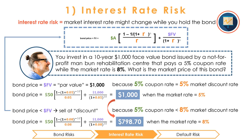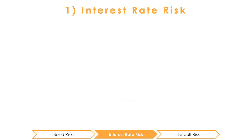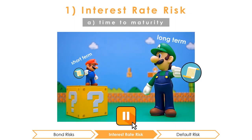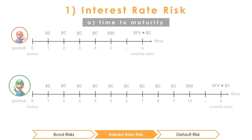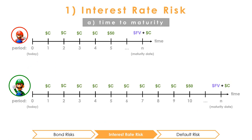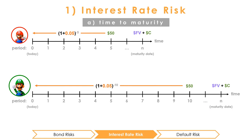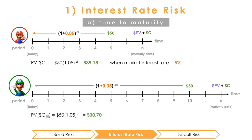All bonds are susceptible to interest rate risk, but certain bonds are more sensitive than others to interest rate changes. This sensitivity depends on a bond's time to maturity. Which do you think would be more sensitive to interest rate changes — a long-term bond or a short-term bond? Long-term bonds are more susceptible to interest rate changes. Longer-term bonds have coupon payments that won't arrive for a long time, meaning those cash flows must be discounted more to reach their present values. Compare the $50 coupon you'll receive in five years to the one you'll receive in 10 years. At 5% interest, the fifth-year coupon is worth $39.18 and the 10-year coupon is worth $30.70 in today's terms.